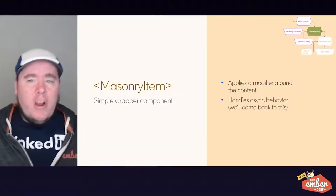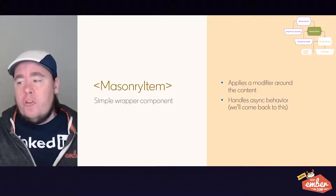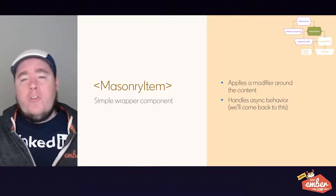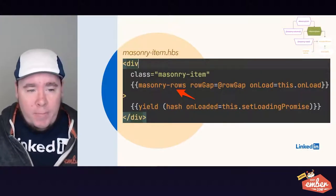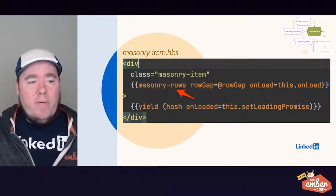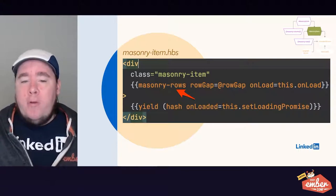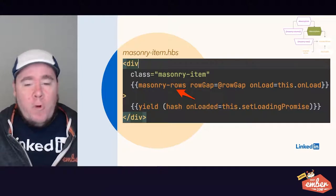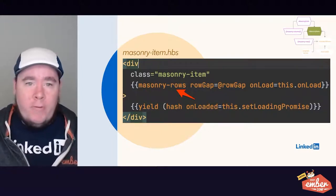The masonry-item component is a simple wrapper around the user's content. It applies a masonry-rows modifier to the wrapper and handles some async behavior. The template applies the masonry-rows modifier on the wrapper div, passing the row gap and a promise which handles async behavior, and yields out an action to the consumer that will also be used for the async behavior.